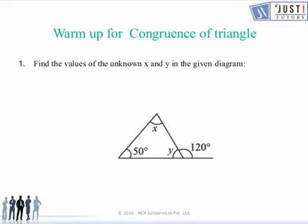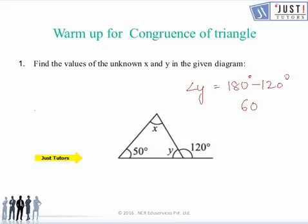You can pause this video and try this question. In this question we have to find the values of unknown angles X and Y. As we can see, angle Y and 120 degrees are forming a linear pair, so angle Y equals 180 degrees minus 120 degrees, which equals 60 degrees. And as we know, angle X plus 50 degrees should be equal to 120 degrees by the exterior angle property, so angle X equals 120 degrees minus 50 degrees, which equals 70 degrees.